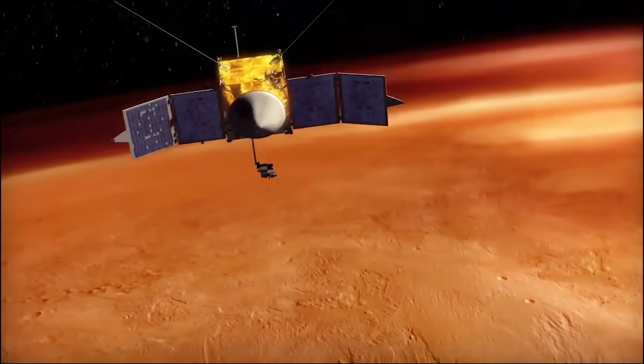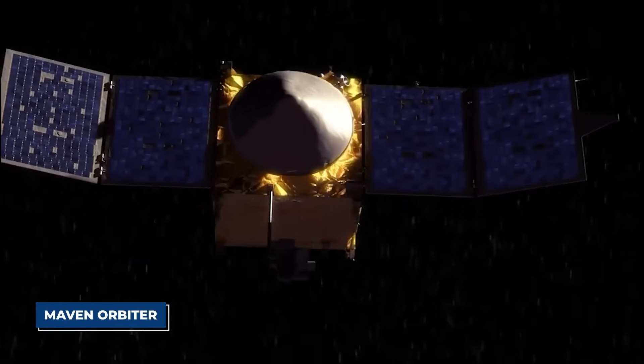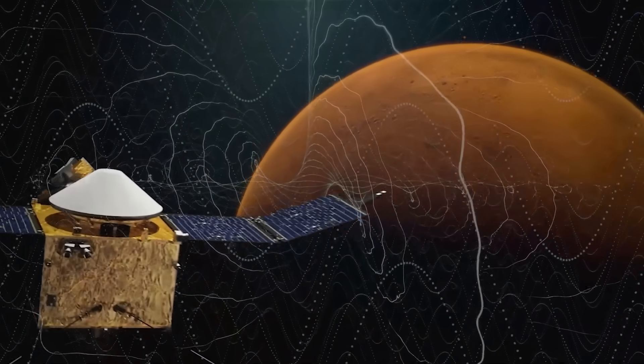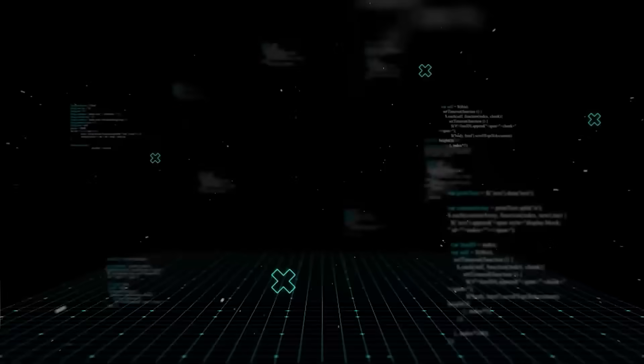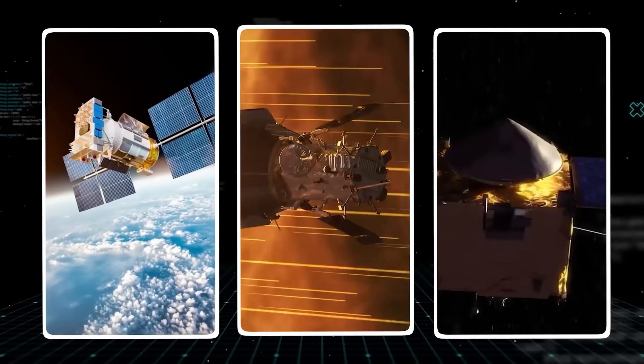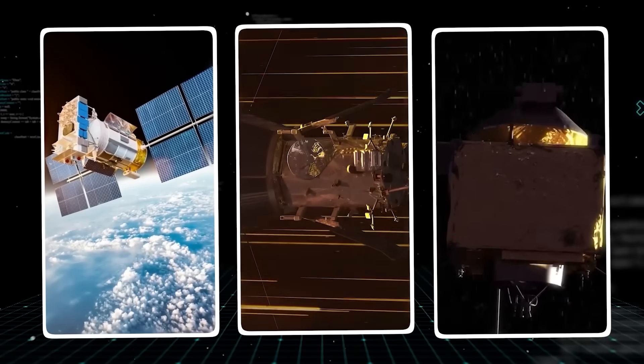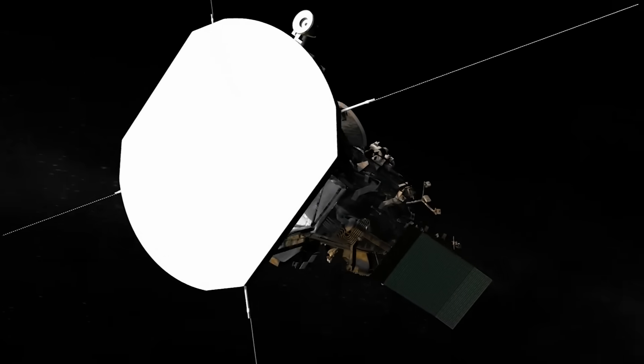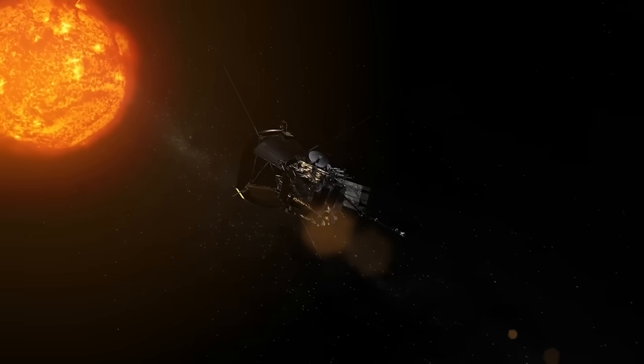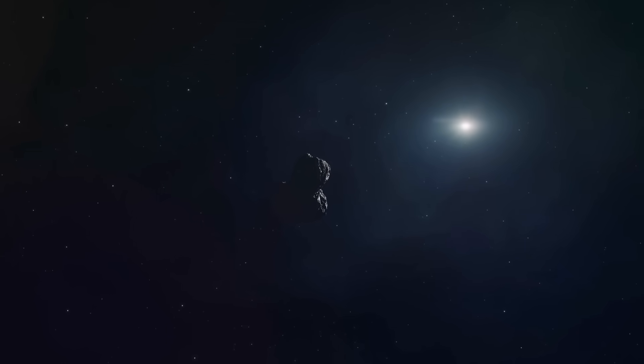Then, by 8:11, the MAVEN orbiter, circling Mars, picked up a high-energy particle deflection event that matched the comet's exact coordinates. Three independent, highly advanced pieces of technology all told the same impossible story. The thing nobody tells you is that, in space, getting one spacecraft to notice an anomaly is interesting. Getting three to see the exact same thing, at the exact same time, from completely different vantage points, is undeniable proof.